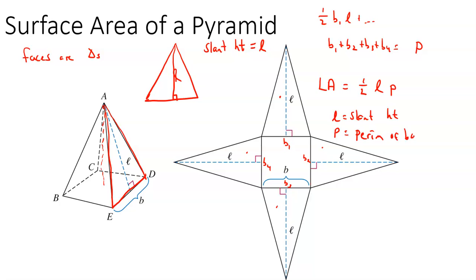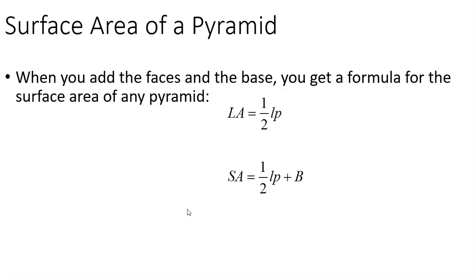In this case it was just adding four sides to get the perimeter. If you had a hexagonal pyramid, you'd add six sides. One-half slant height times perimeter gives lateral area. For total surface area, take the lateral area and add the area of one base — and that base area depends on the shape. For a rectangular base you'd multiply length times width; for a regular hexagon you'd use one-half A times P.